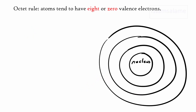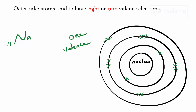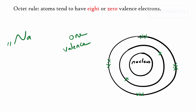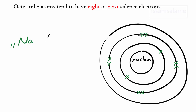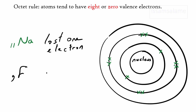Let's have another example about sodium. Sodium has 11 electrons; if we distribute them, they're going to be 2, 8, 1. Now, to apply the octet rule, it needs to lose that electron. So by losing that electron, it will have 0 or 8 valence shell electrons. So as we could see, sodium to apply the octet rule lost 1 electron, while fluorine to apply the octet rule gained 1 electron.